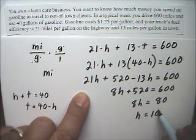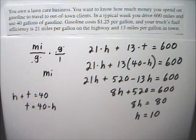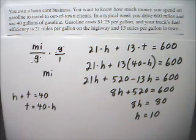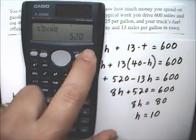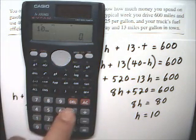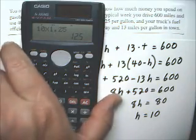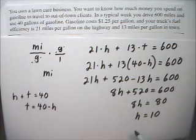Now, when I subtract 520 from both sides, I get 8H equals 80, and the number of gallons I use on the highway equals 10. This doesn't answer the question. The question is how much money you spent. So, it's going to be 10 times 1.25. So, the answer is $12.50.